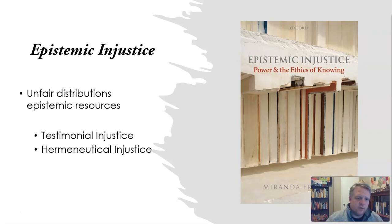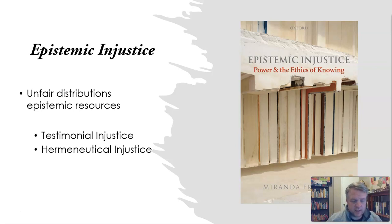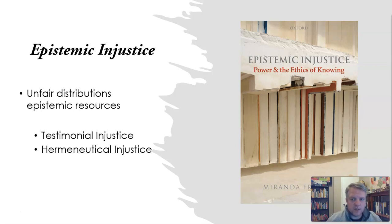Let's turn then to what an epistemic injustice is. This is a term coined by Miranda Fricker. An epistemic injustice is basically an unfair distribution of epistemic resources — a wrong done to someone in their capacity as a knower, a wrong done to someone in their capacity as a participant in one of these epistemic practices. So these resources are not fairly distributed to them; they are suffering from an epistemic injustice.